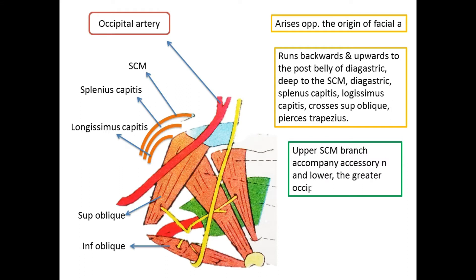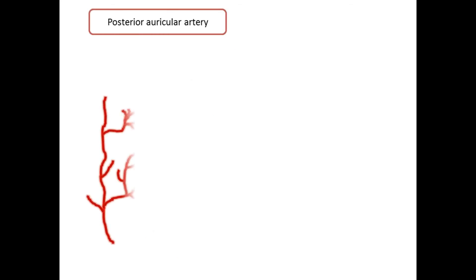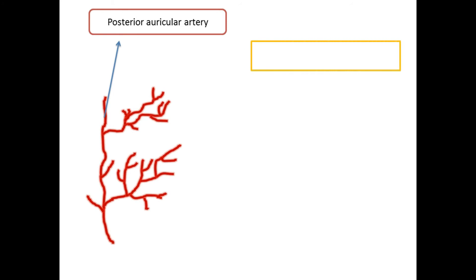In the carotid triangle, the occipital artery gives two sternocleidomastoid branches: the upper branch accompanies the accessory nerve, and the lower branch arises near the origin of the occipital artery. The branches of the occipital artery are mastoid, meningeal, and muscular; one of the muscular branches is large and is called the descending branch.